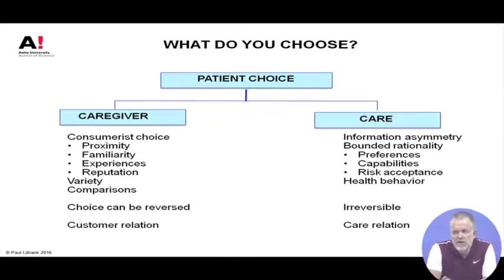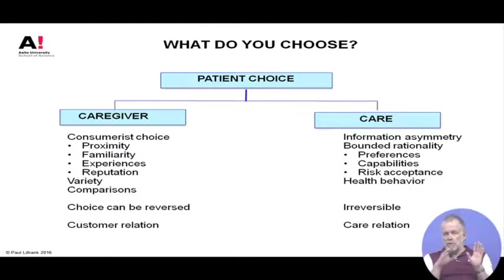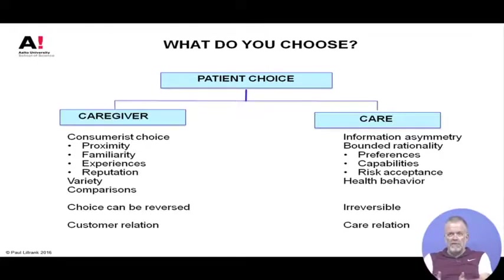This list is not complete — it's like any kind of business. The other aspect is the choice of care. Once you have chosen the hospital or doctor, comes the question of what should be done. It's important to remember these two choices are very different: information asymmetry and the knowledge gap or power gap applies mostly to the choice of care, not to the choice of caregiver.